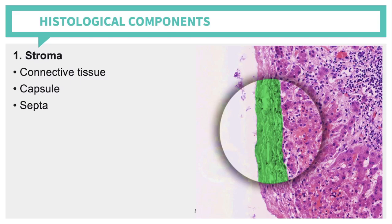Now let's proceed to the histological components of your liver, starting with the outermost portion. This covering is what we term your stroma, which is a connective tissue — specifically type 3 collagen — forming a mesh that provides integrity to the hepatocytes and sinusoids. Within the stroma, you can identify two components: the capsule and the septa.